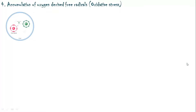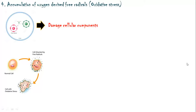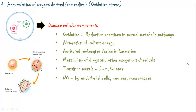The fourth mechanism is accumulation of oxygen-derived free radicals, also known as oxidative stress. Free radicals contain unpaired electrons and are highly unstable. They donate or gain electrons from cellular components while causing damage to them. Free radicals can be generated inside cells by normal oxidation-reduction reactions, absorption of radiant energy, inflammation, metabolism of drugs and exogenous chemicals, and transition metals like iron and copper. Nitric oxide, produced by endothelial cells, neurons, and macrophages, can also be converted into highly reactive free radicals.